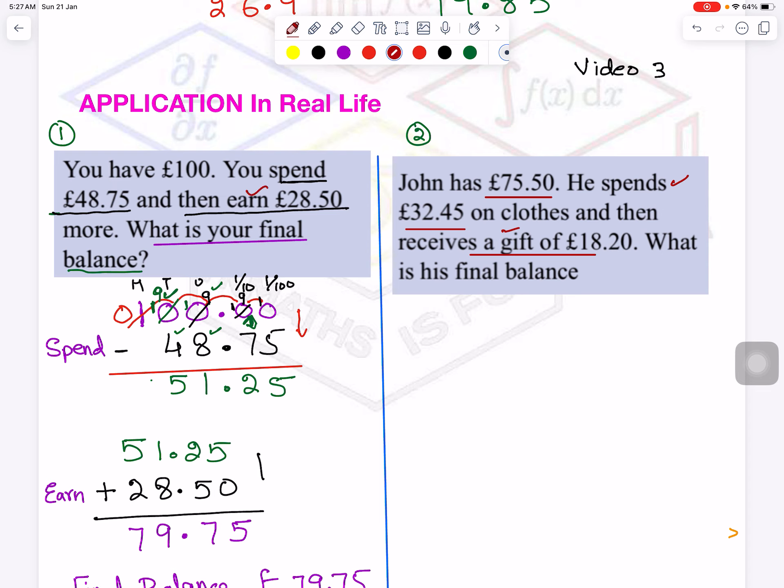Money is coming to you. So first of all I will subtract the 75.50 minus, because what? I am spending it. So £32.45. I will subtract. So now when you are subtracting, we start from this side. 0 minus 0 is 0, 5 minus 4 is 1. Decimal under decimal. 5 minus 2 is 3. 7 minus 3 is 4.